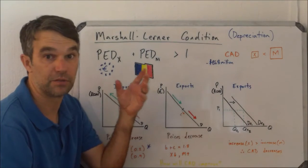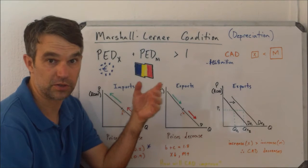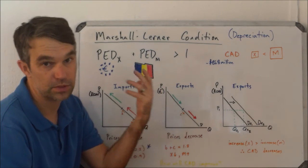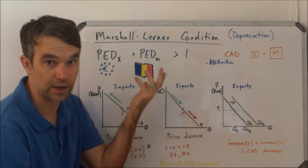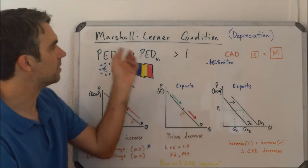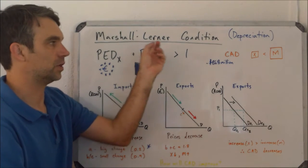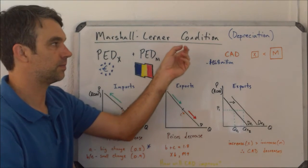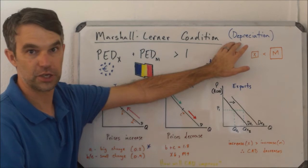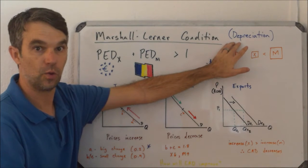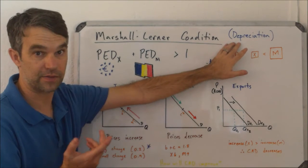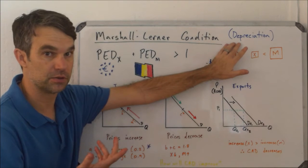A higher-level concept that further explores the ideas of the balance of payments — specifically the current account, and specifically deficits — is what we call the Marshall-Lerner condition. This condition addresses the question of: if a currency is depreciating, will the current account deficit reduce?